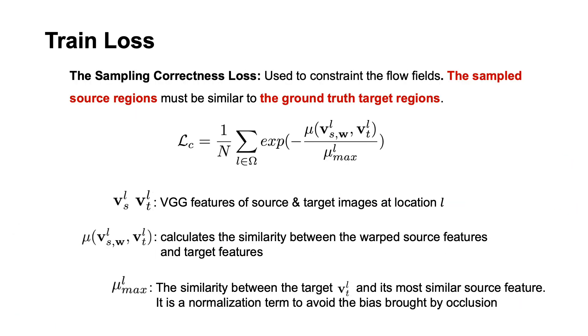The sampling correctness loss is used to constrain the flow fields. This loss is designed following a simple principle: the sampled source region must be similar to the corresponding ground truth region. We use the VGG net to extract the feature descriptions.